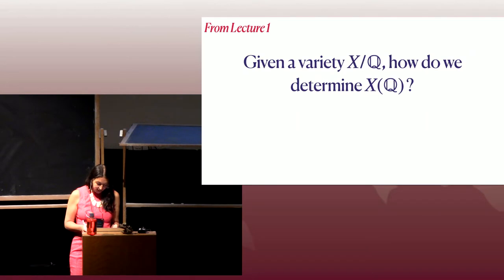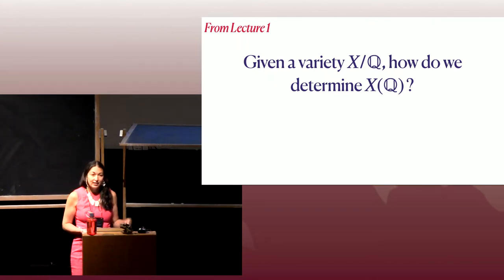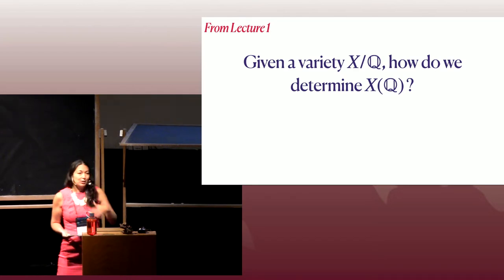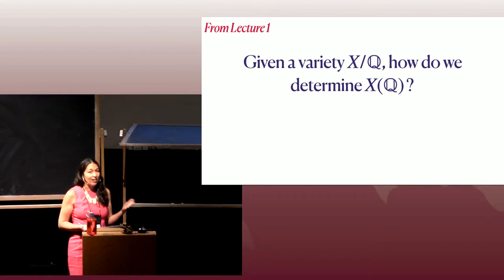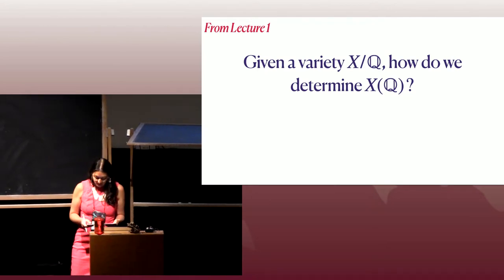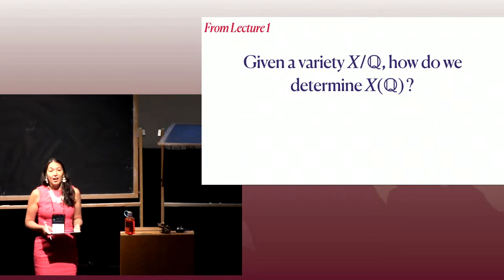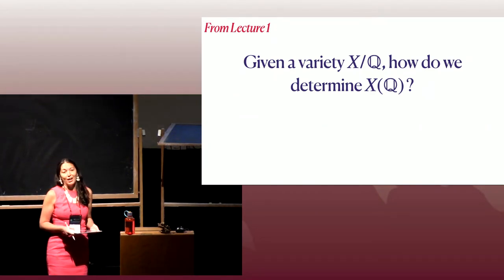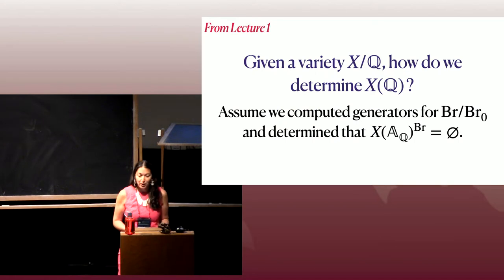In lecture one, we started with this fundamental question: if you're given a variety, how do you determine the set of rational points? We said we could search — just do a naive point search — but at some point you want to know that you have found them all. So we started considering the extreme case where you're searching and searching and don't find any, and you want a way to prove there are no rational points.